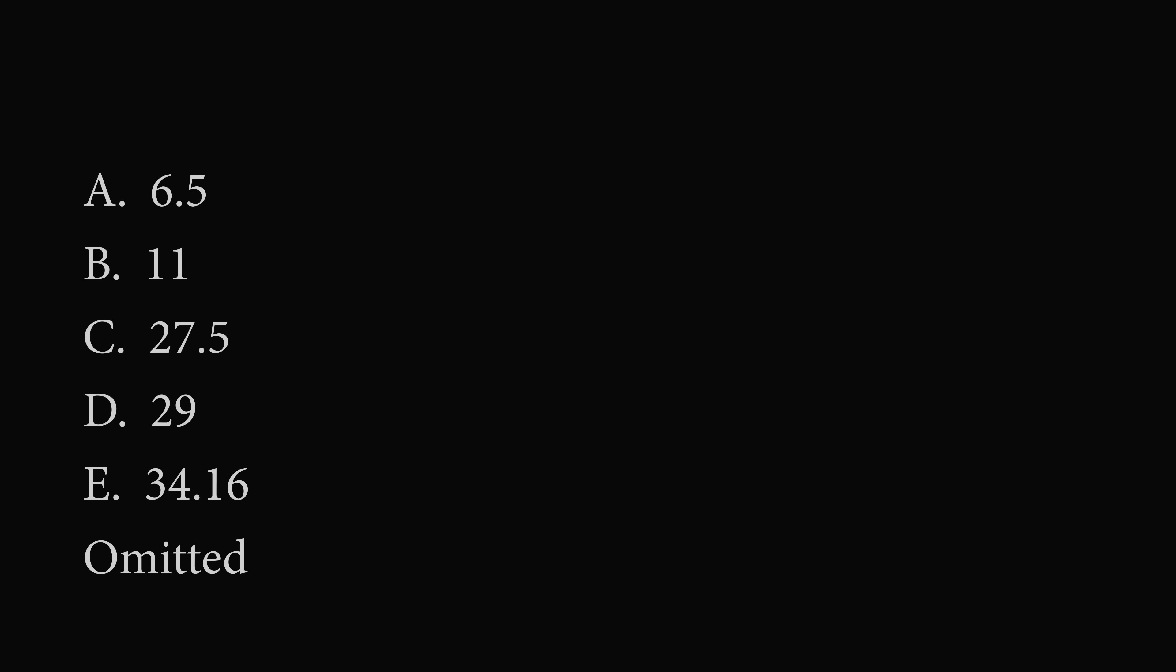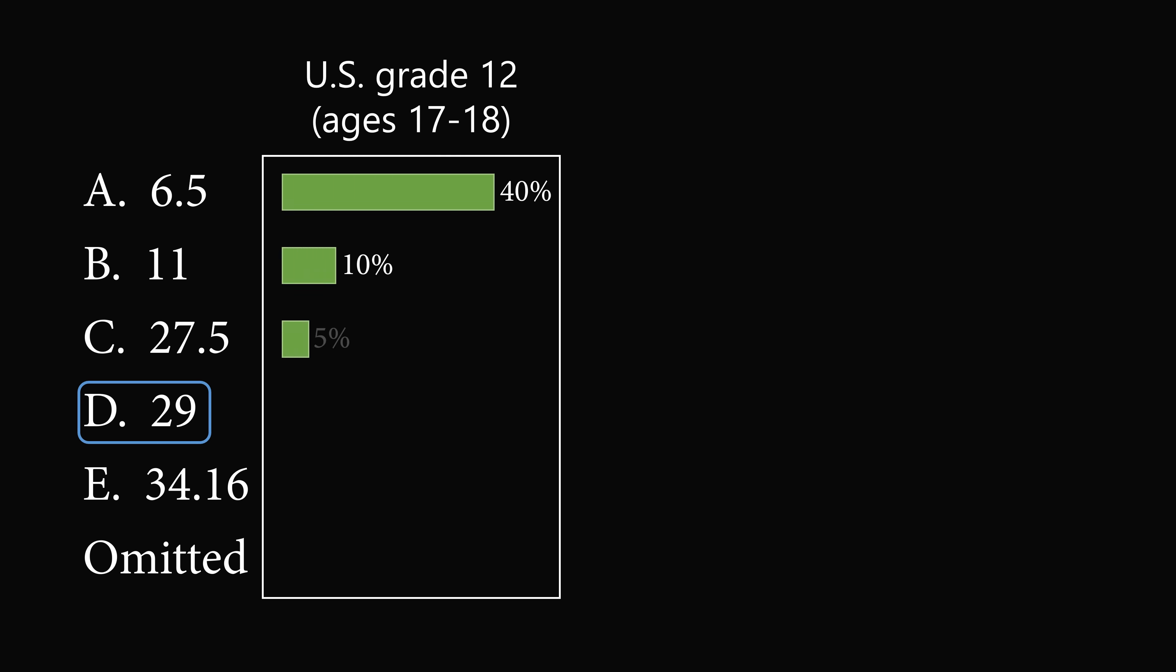So where did students go wrong? The correct answer is D 29. But here's how the students responded. 40% gave the wrong answer of 6.5, and the next wrong answer was 34.16 at 15%.